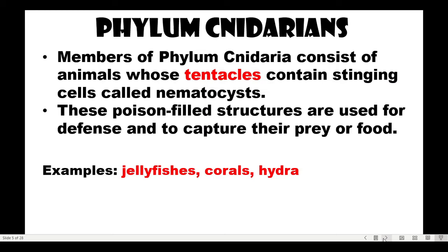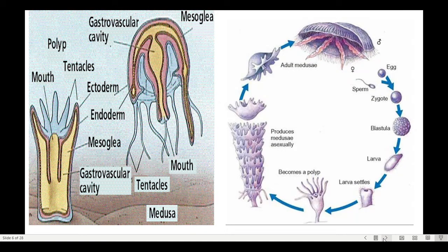Next, Phylum Cnidaria. Members under this phylum are animals whose tentacles contain stinging cells called nematocysts. These poison-filled structures are used for defense and also to capture their prey for food. Examples are jellyfish, corals, and hydra. They have tentacles with poison — that is their defense mechanism and feeding strategy.